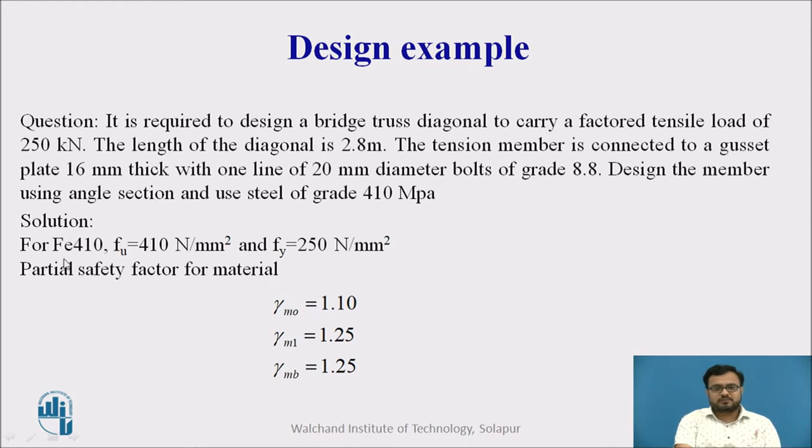The given data is Fe equal to 410. For that one, Fe equal to 410 N per mm square. Fy equal to 250 N per mm square. The partial safety factor as per IS 800, 2007 equal to gamma M0 equal to 1.1, gamma M1 equal to 1.25, and gamma MB is equal to 1.25.